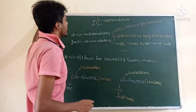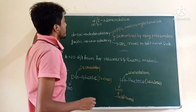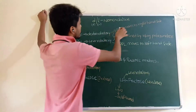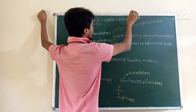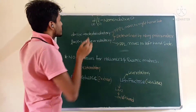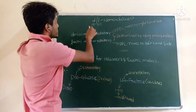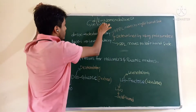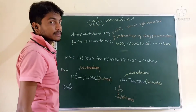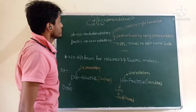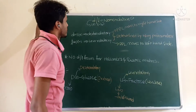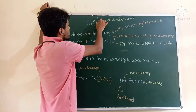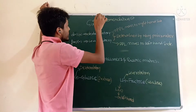The topic is d and l nomenclature, specifically small d and small l configuration assignment. Small l can also be written as a minus symbol, and small d can be represented with a positive sign. So when we present this, d goes with positive and l with negative.